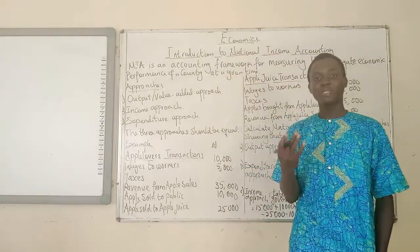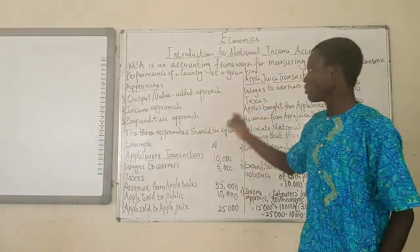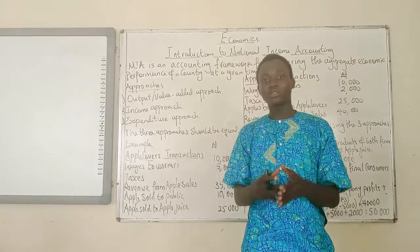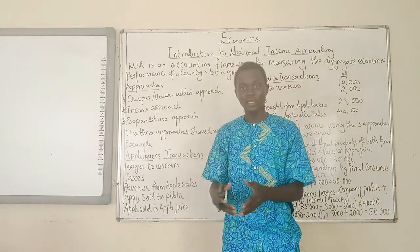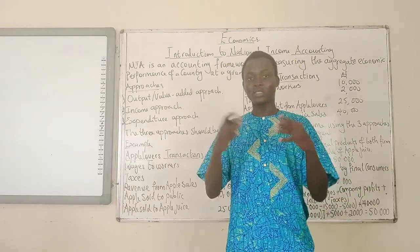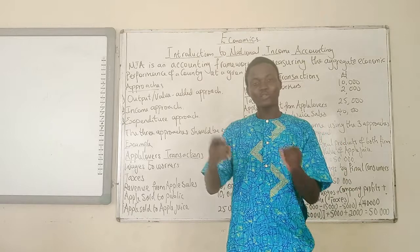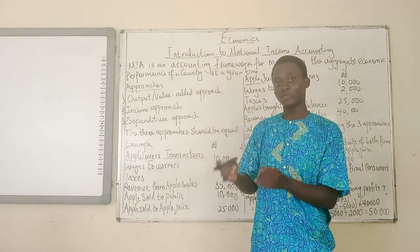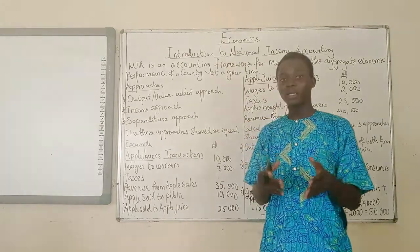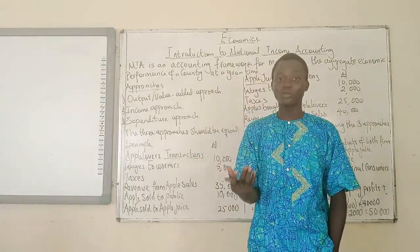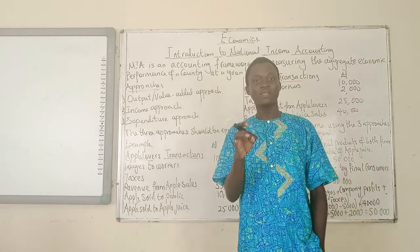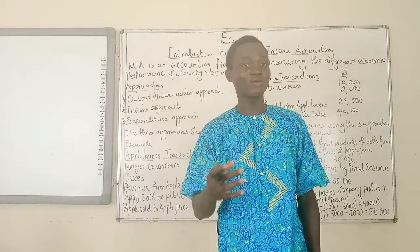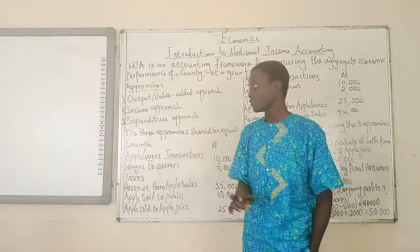A lot of these approaches give us three different perspectives at looking at the same thing. The output/value-added approach is calculating the national income from the value of the currently produced final goods and services. It does not include intermediate goods. Intermediate goods are goods that are used up in the production of another good in a given year. Now, if what should have been an intermediate good is not used up in a given year, it is calculated as a final good on its own. So it has to be used up in a given year for it to qualify as an intermediate good.